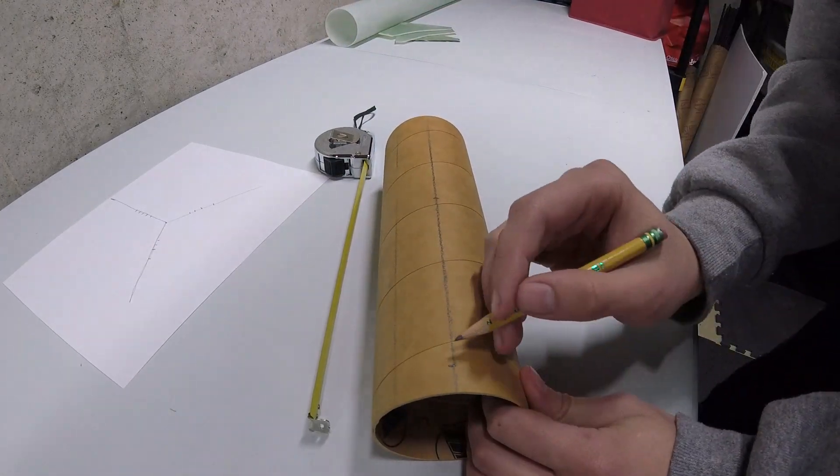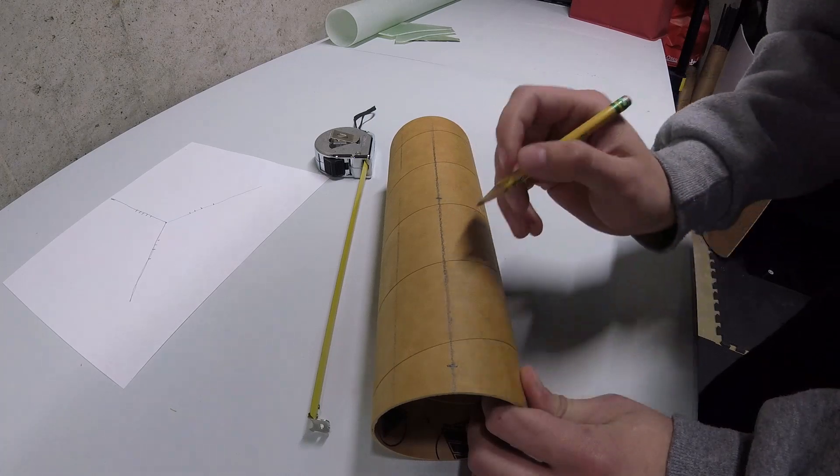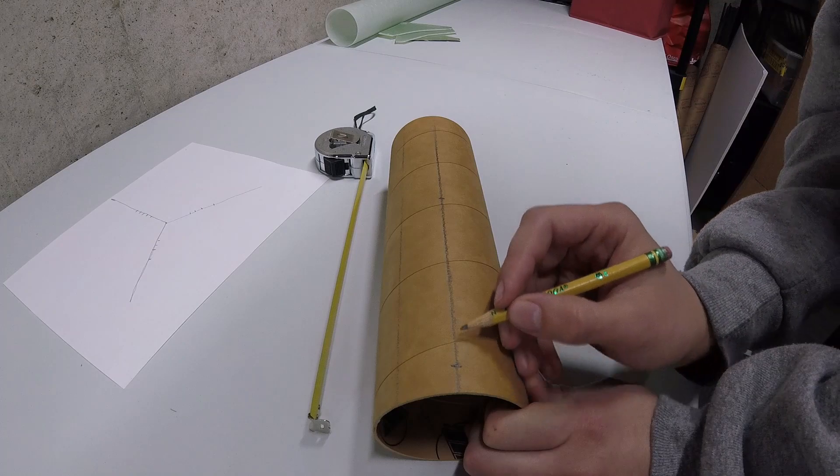You take the numbers of where you want your fin slot to sit and you mark them. Now you'll come in with a Dremel and we'll cut this out. So let's go do that.